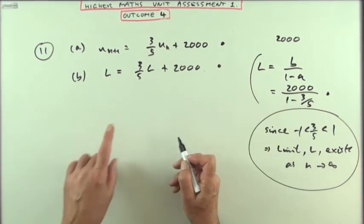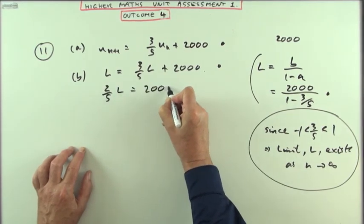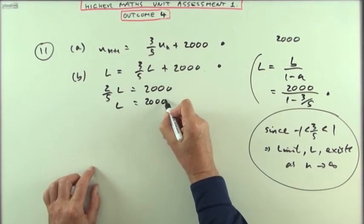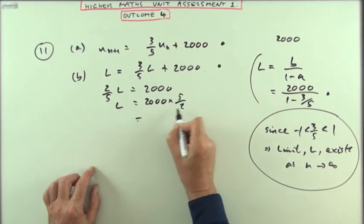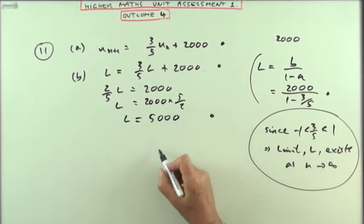And then the next mark's just for evaluating it. So, either way around, whichever way you want to work it, take that across. You'll have two-fifths of L, there's 2,000. Take the five across and multiply, and the two across and divide. And you'll have 1,000, you'll have 5,000. That's the third mark.